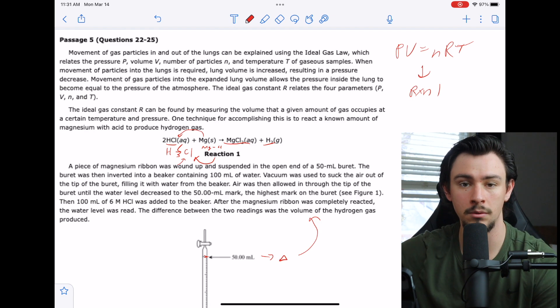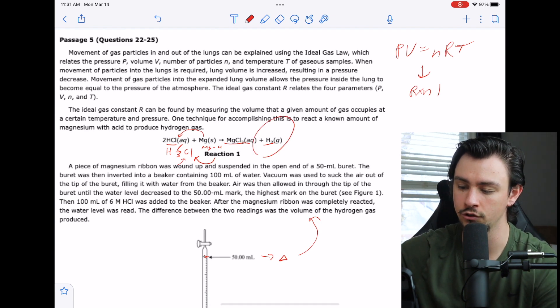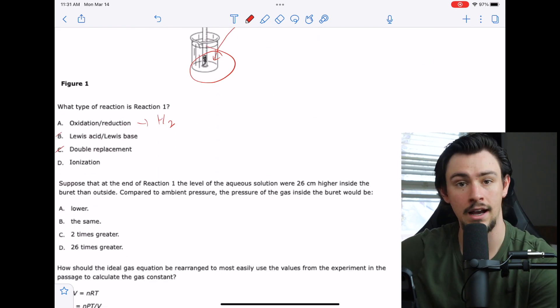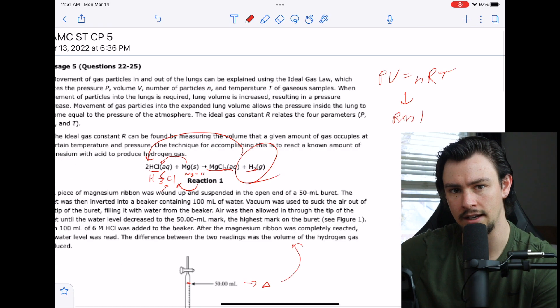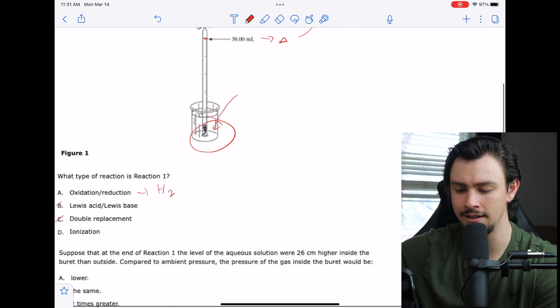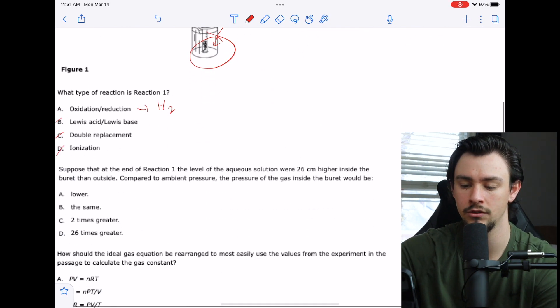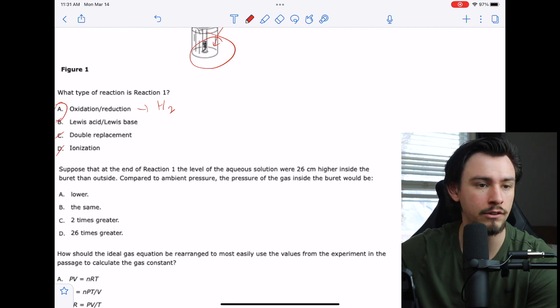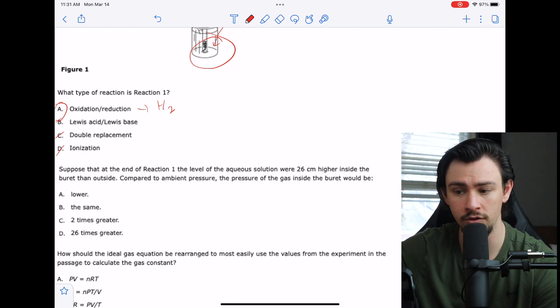C says a double replacement. We don't end up with a double replacement because this hydrogen actually just ends up binding with itself. So maybe not C. And then ionization. We don't see any ionized elements here. So maybe not D. And the correct answer would be redox reaction, which it usually is, especially if you see some hydrogens or oxygens moving.